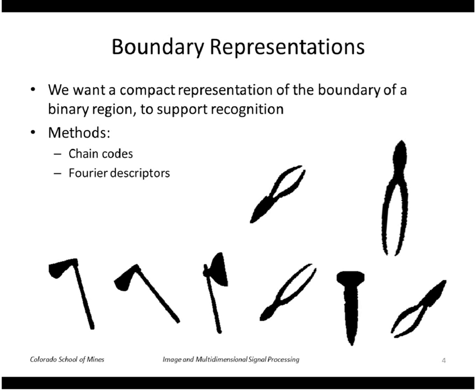First, let's look at boundary representations. We want a compact representation. We're going to consider a binary region, so you've segmented the object into two classes: a foreground and a background. We'll look at two possible methods to do this: one is chain codes and the other is Fourier descriptors.